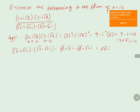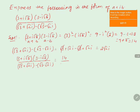So the full expression 3 plus i root 5 into 3 minus i root 5, divided by root 3 plus root 2i minus root 3 minus root 2i, simplifies to numerator 14 divided by denominator 2 root 2 into i.